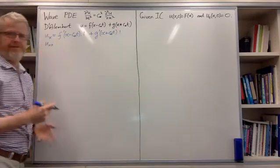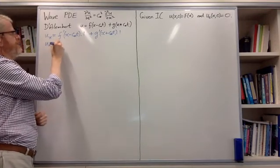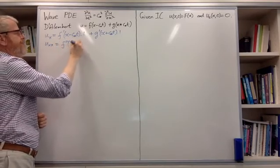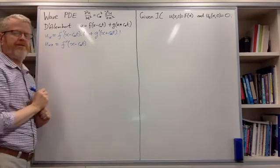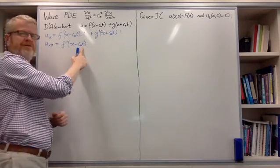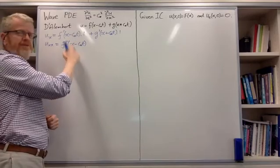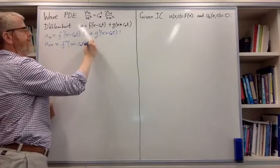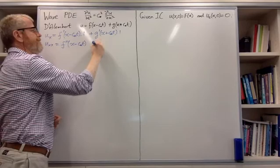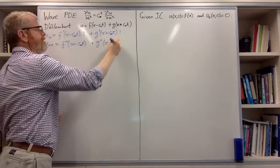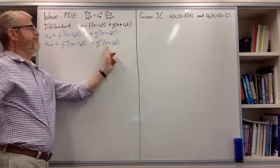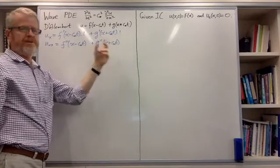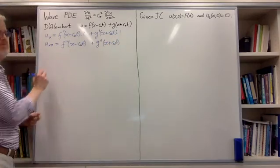Now the second derivative of u with respect to x. Differentiating again: the derivative of f-dashed gives f-double-dashed of x minus c-star t times 1 squared, which is 1, plus the derivative of g-dashed of x plus c-star t times the derivative of its argument with respect to x, which is 1 squared — so we just omit those factors of 1.